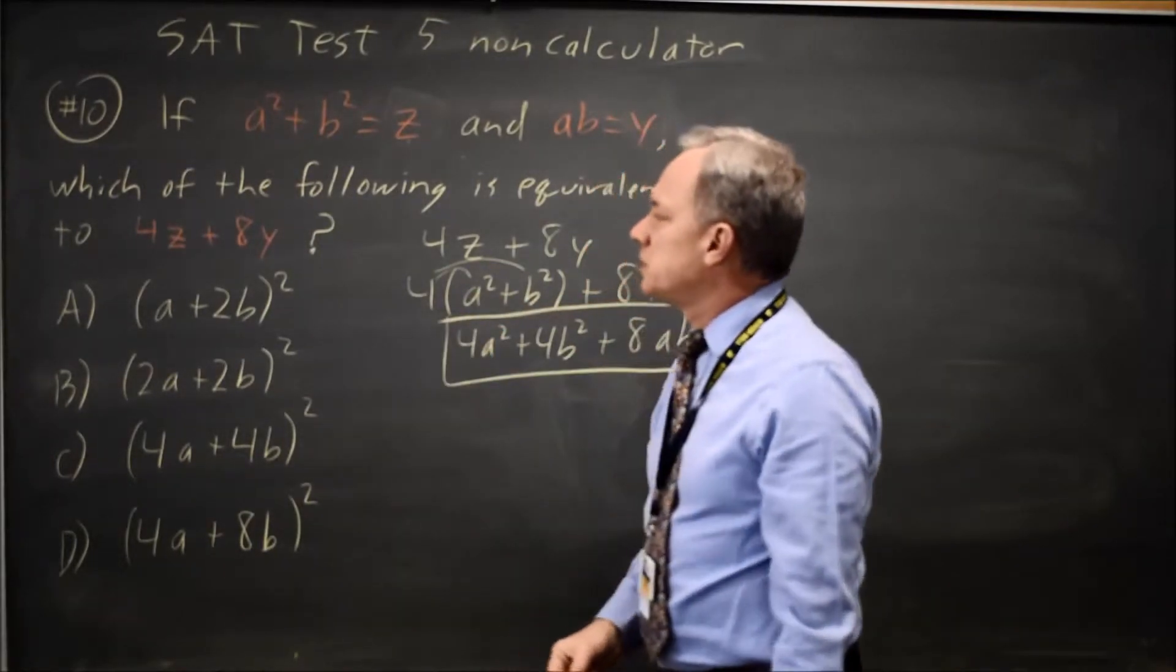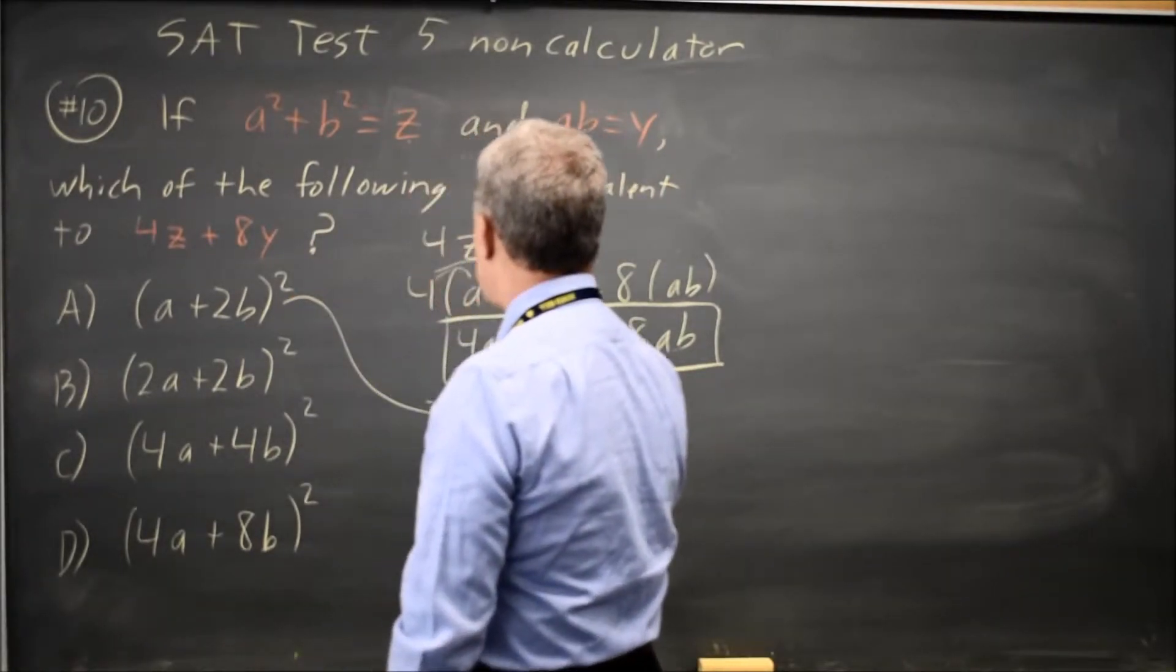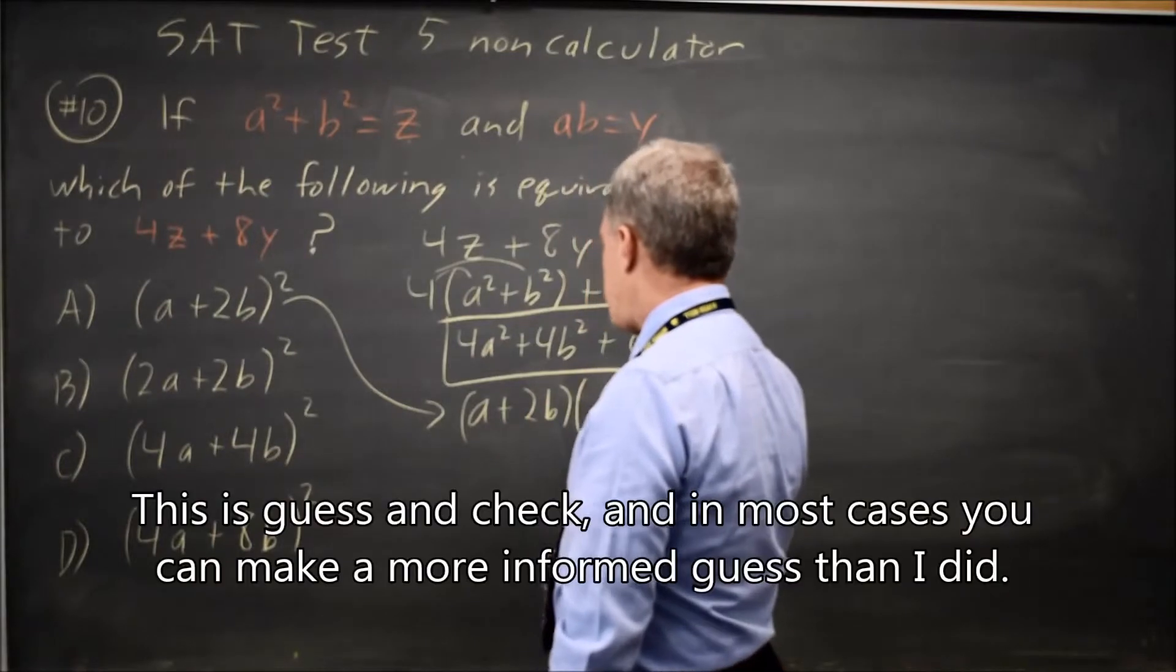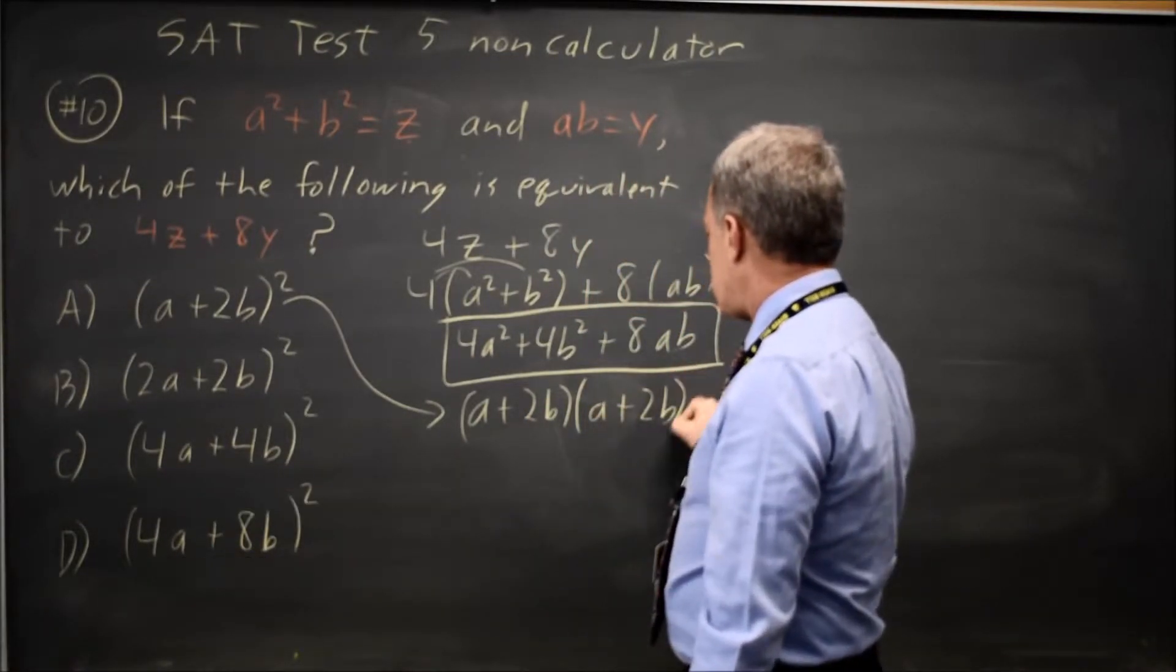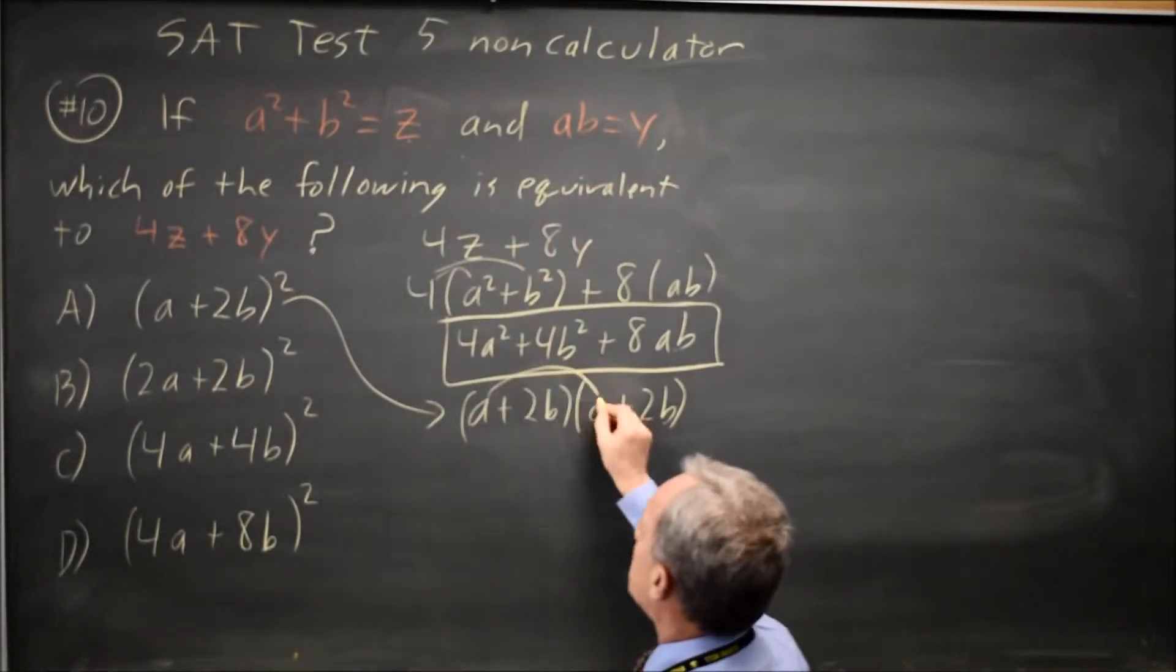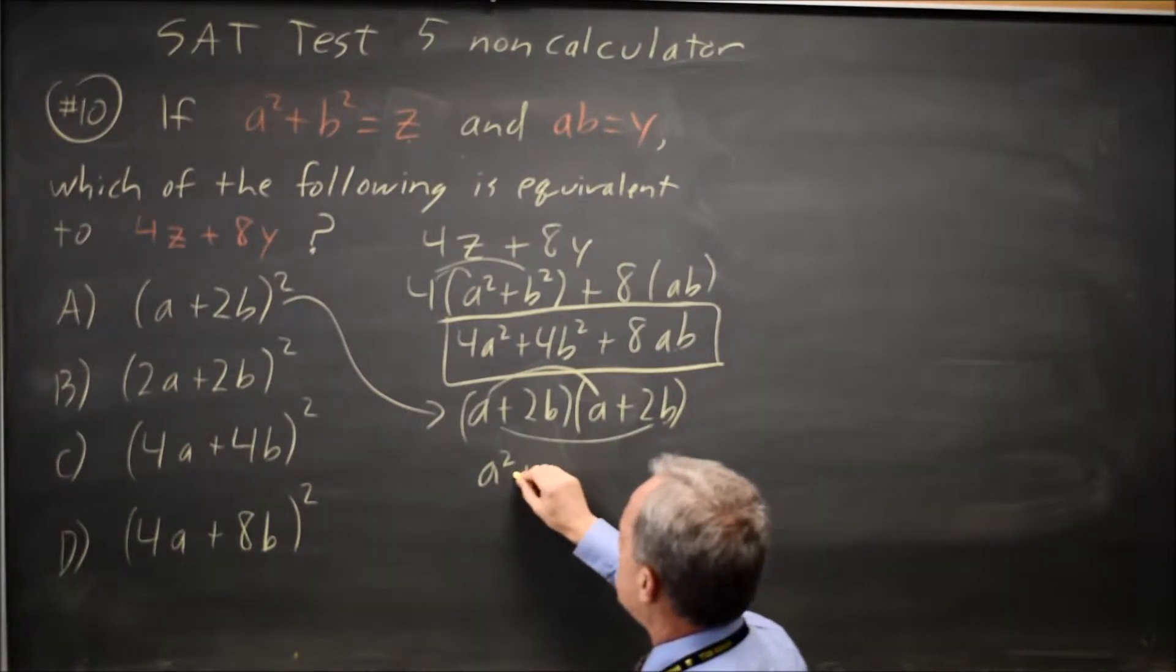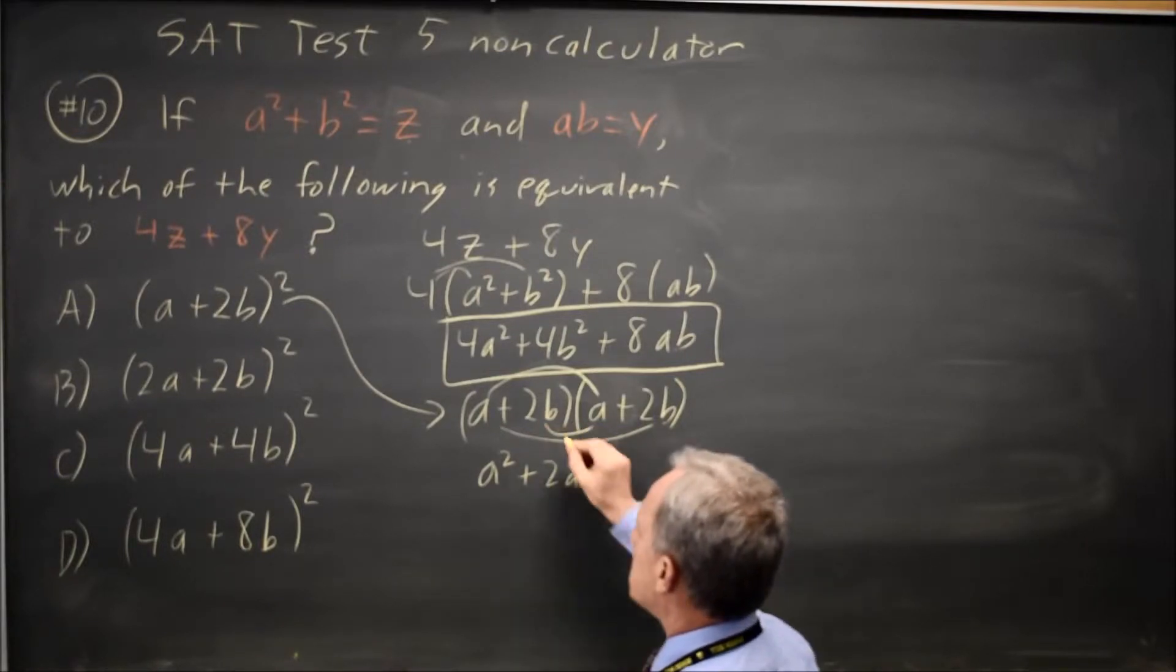And I want one of these to give me the same expression. Let's try a plus 2b quantity squared. Squaring a binomial, I like to write it for FOIL rather than trying to square it in my head. FOIL, I multiply first times first. a times a is a squared. Outside times outside, a times 2b is 2ab. Inside times inside, 2b times a is another 2ab.